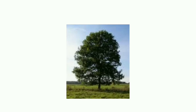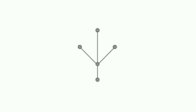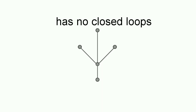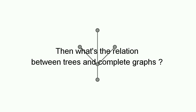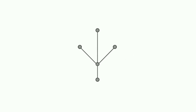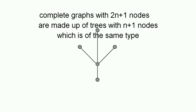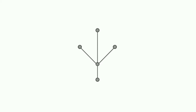Now coming to trees — these are graphs with no closed loops in them. The question is, what is the relation between a complete graph and a tree? It is conjectured that complete graphs with 2n plus 1 nodes in them can be covered by trees with n plus 1 nodes if we repeat them. In other words, a complete graph with 2n plus 1 nodes is made up of trees with n plus 1 nodes of the same type.